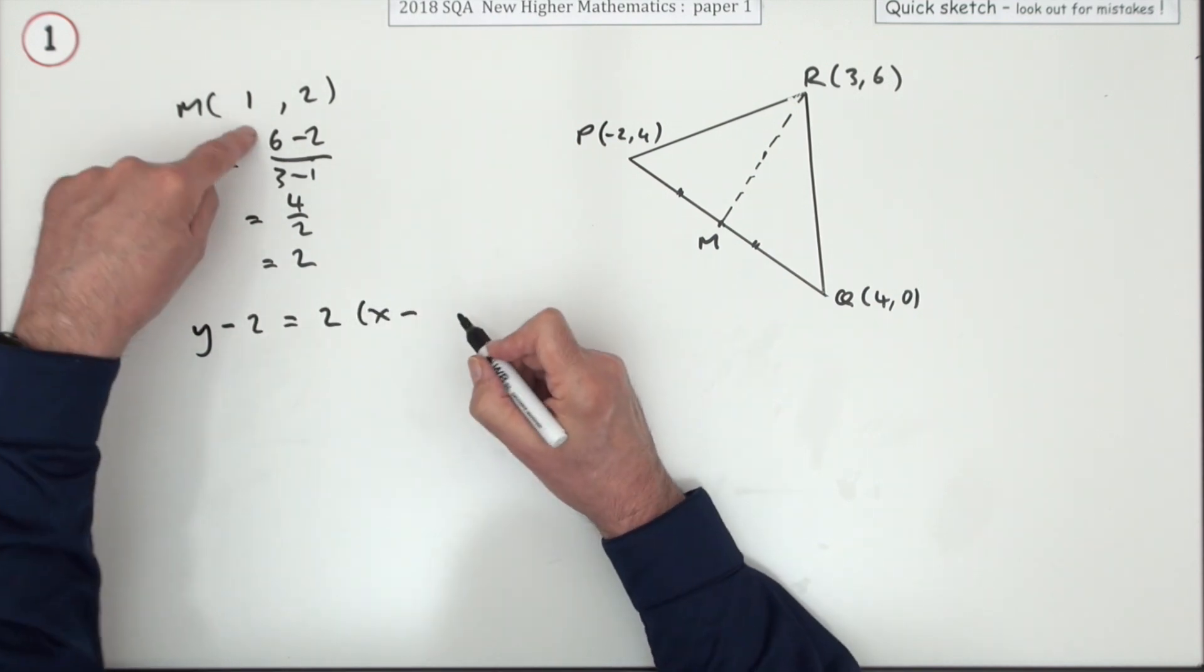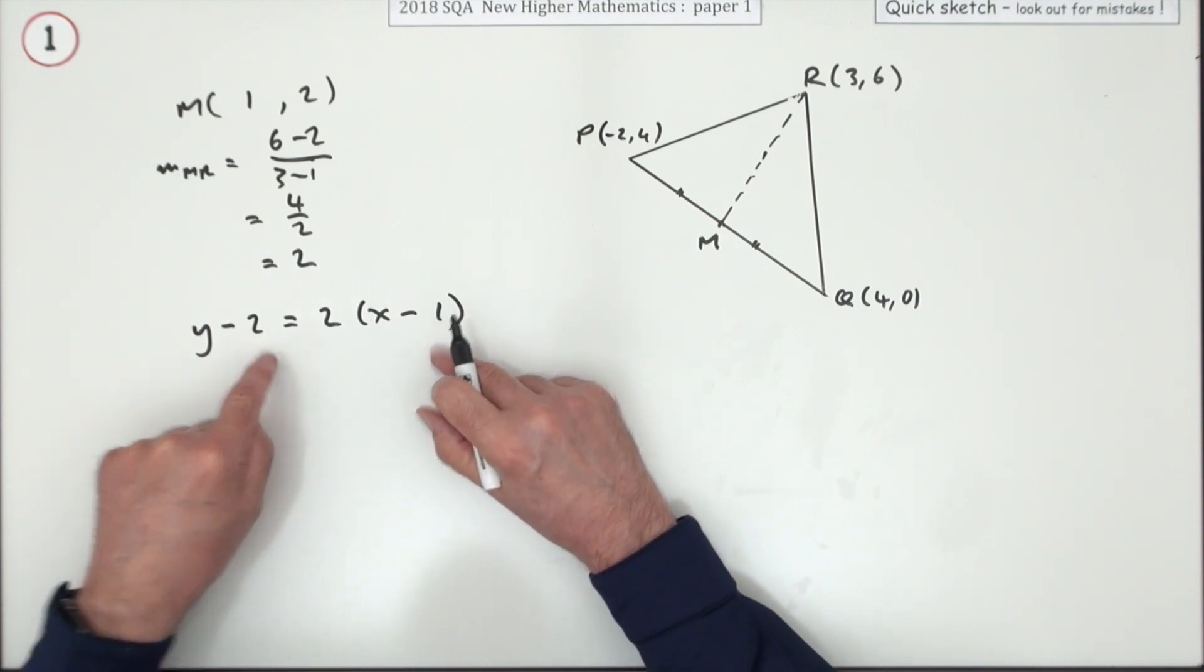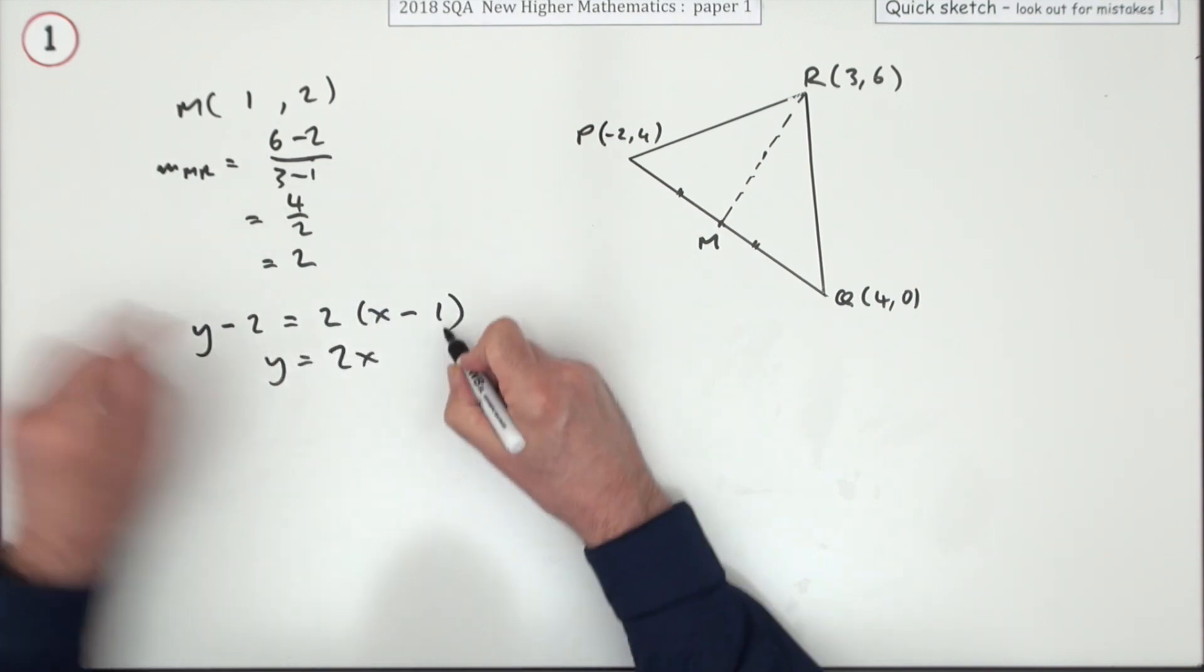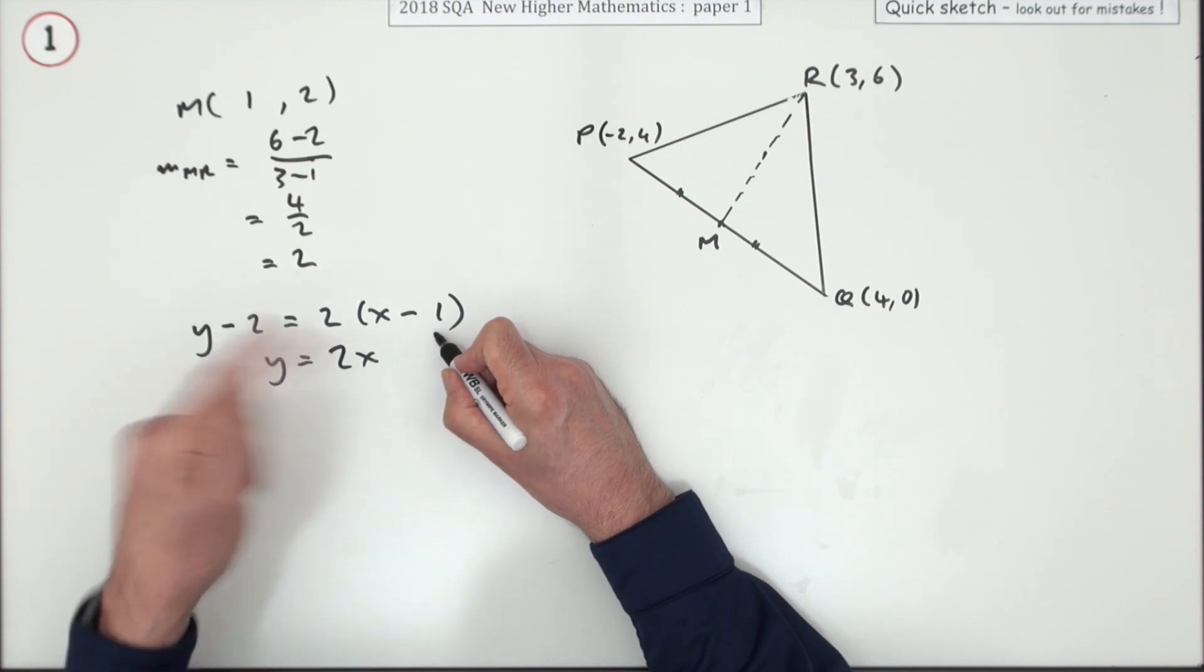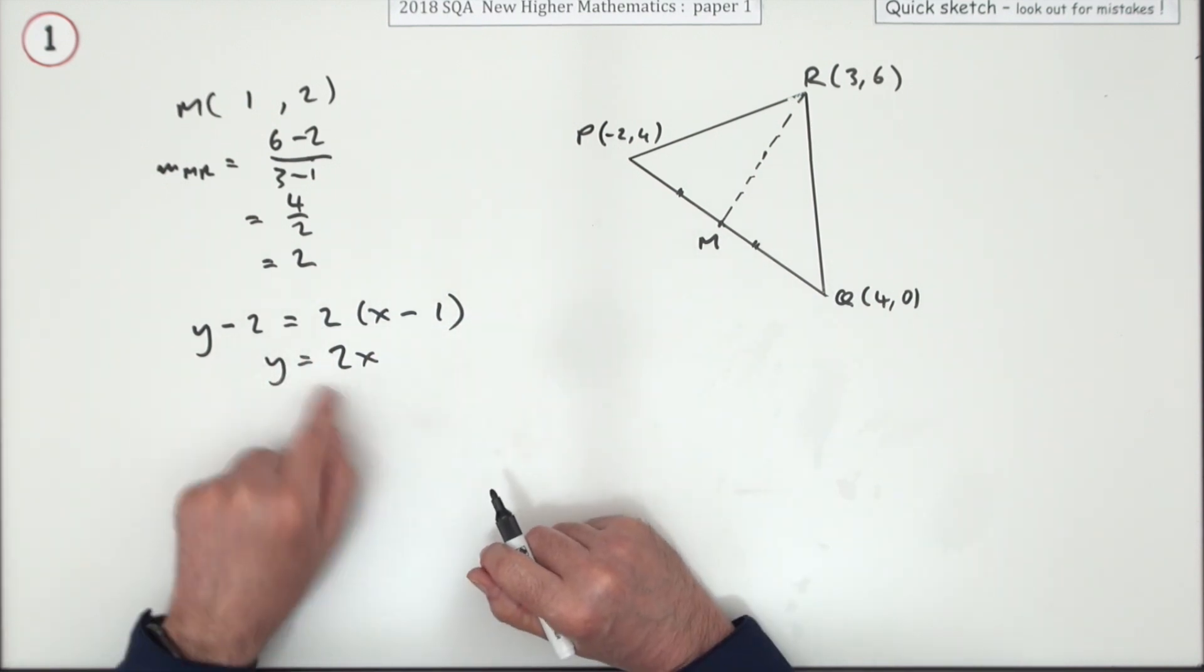You're required to tidy this up. You can't have numbers floating about. So that'll be 2x minus 2, but plus 2 comes to 0, so that's it. If that looks suspicious, just check this other one fits it.